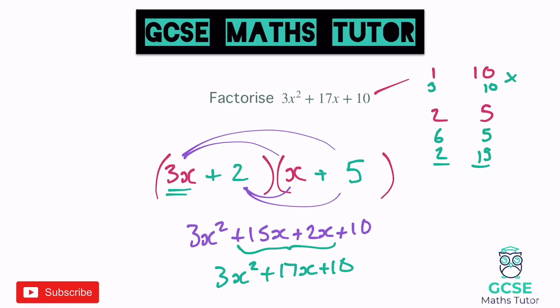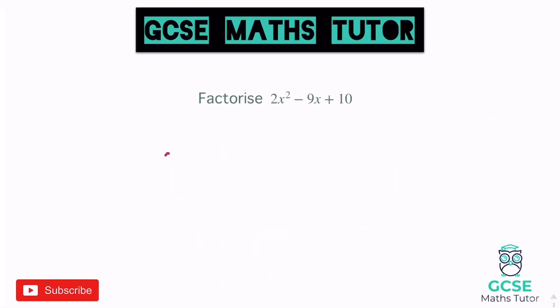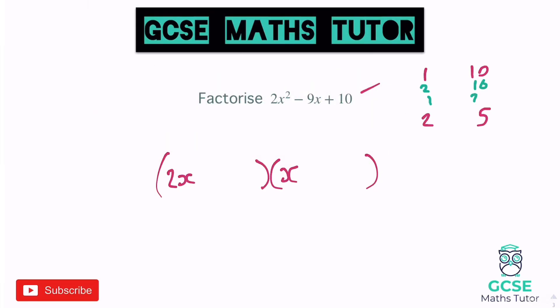Now introducing some negatives — same process though. We'll put 2x in one bracket and x in the other, as we've got 2x squared. Writing down the factors of 10: 1 and 10, or 2 and 5. One of them is going to double, so we could have 2 and 10, or 1 and 20. Are we going to be able to make 9 out of either of those? No — with 2 and 10 we could make 8 or 12, but not 9, and with 1 and 20 we could make 19 or 21 but not 9.